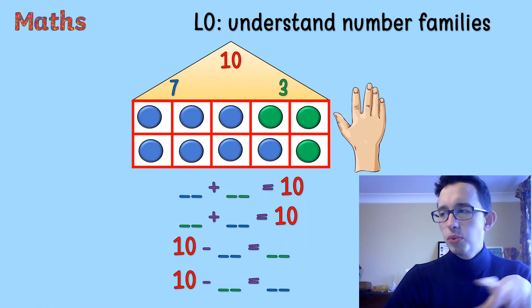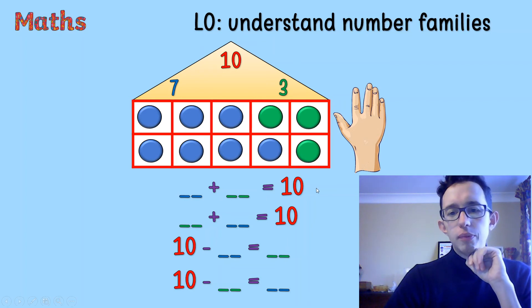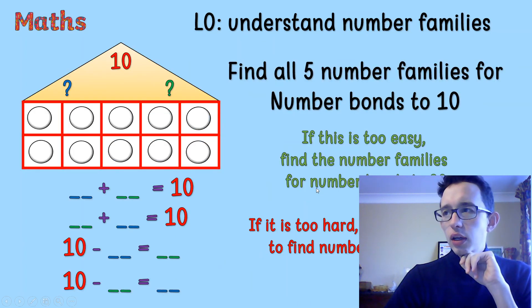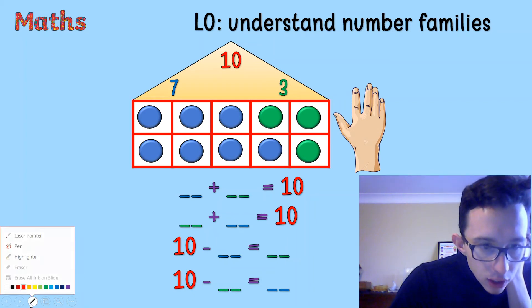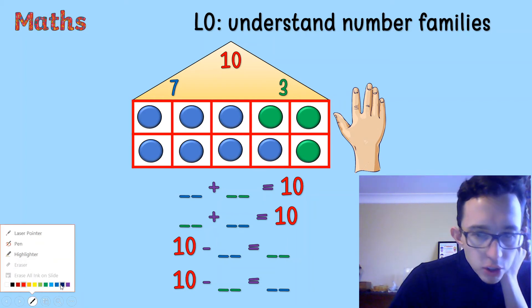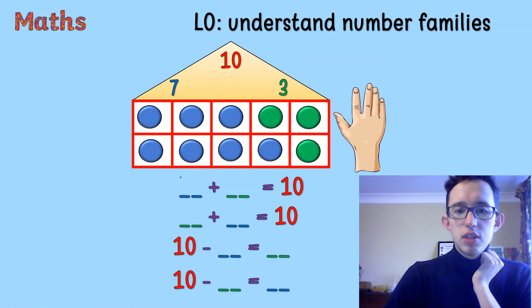Okay, you can pause now or unpause. Hopefully you've done it. So let's talk it through. We've got a 7, add 3 is 10. And 3, add 7 is 10. So let me write those in. We've got 7 add 3 equals 10. 3 add 7 equals 10.